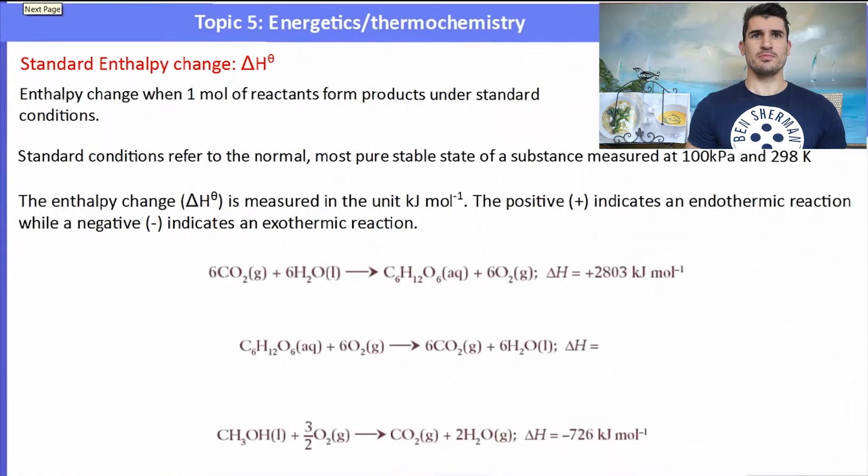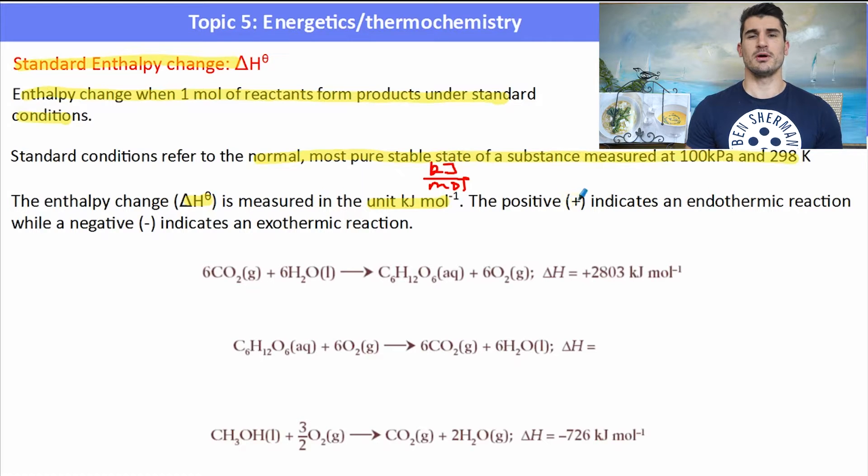So the standard enthalpy change, delta H naught, is the enthalpy change when one mole of reactants form products under standard conditions. And standard conditions are considered to be the normal, most pure, stable state measured at 100 kPa and 298 Kelvin. The energy change, the enthalpy change delta H naught, is measured in the unit kJ per mole. So it's essentially energy divided by mole. And whenever we have the enthalpy change, we have a sign, either positive or negative, that refers to endo or exo.